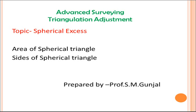The condition regarding angles in a spherical triangle is that the sum of the angles must be equal to 180 degrees plus the spherical excess. The spherical excess φ is the amount by which the sum of the angles of the spherical triangle exceeds 180 degrees. Spherical excess depends upon the area of the spherical triangle. If the sides of the spherical triangle are less than 3.5 km, the spherical excess is ignored.